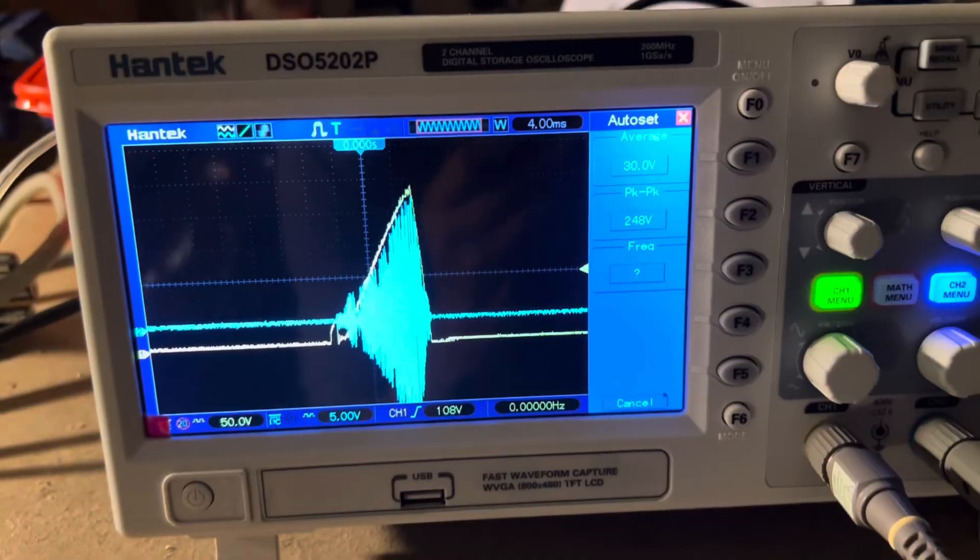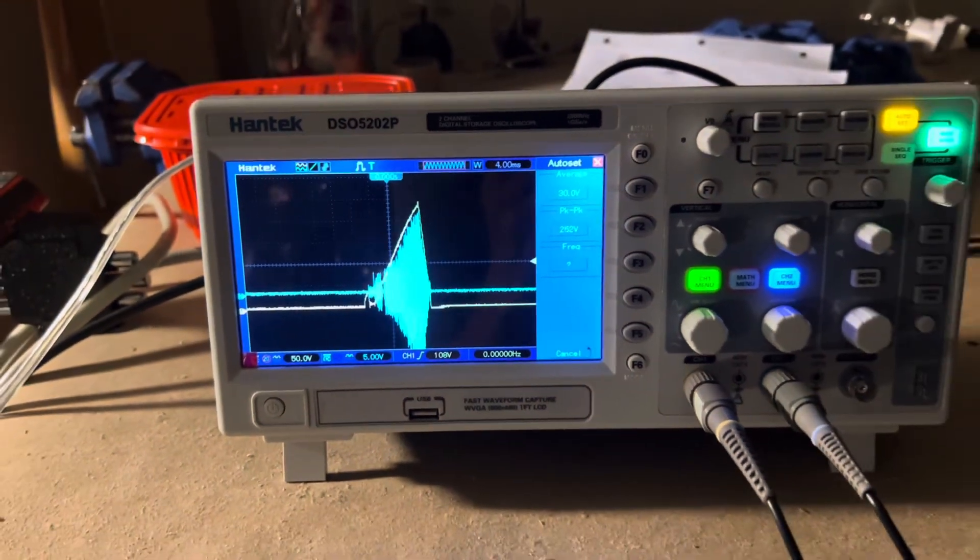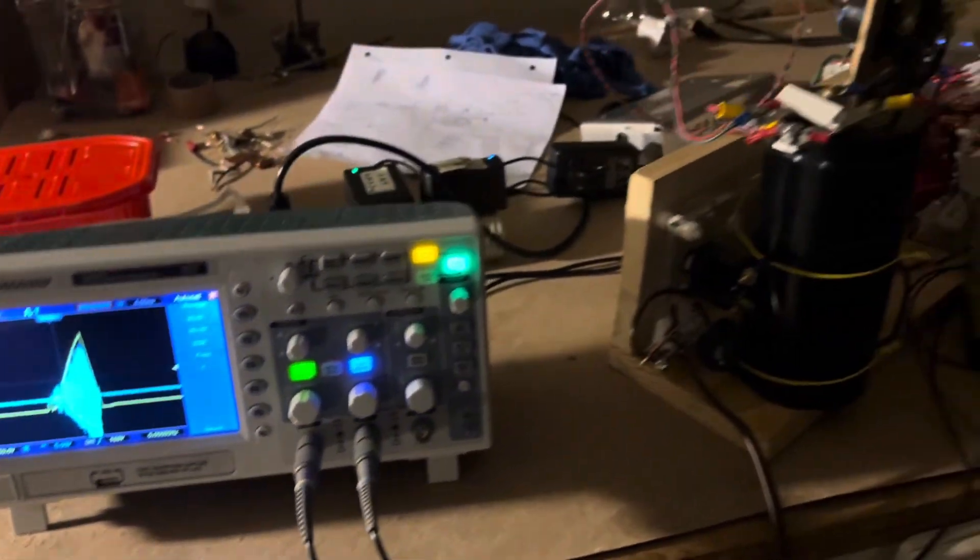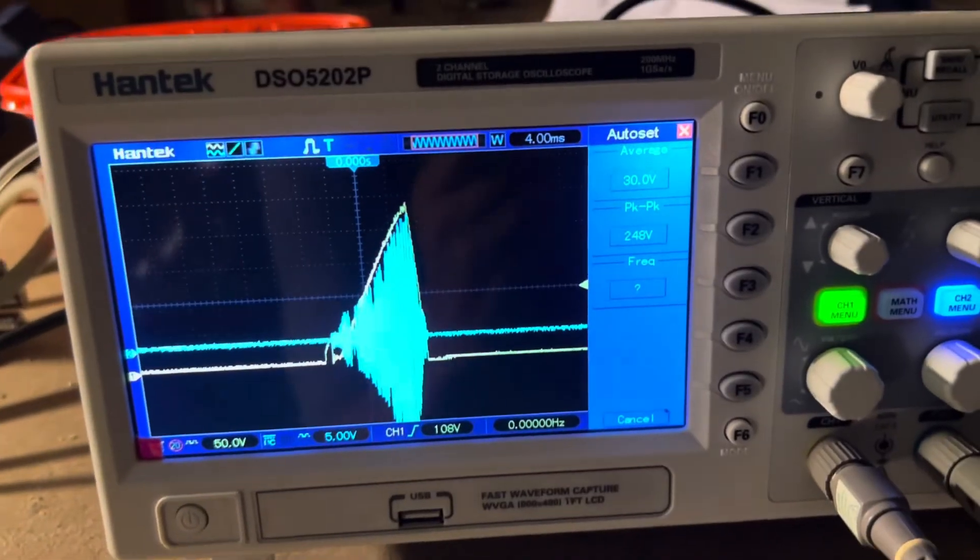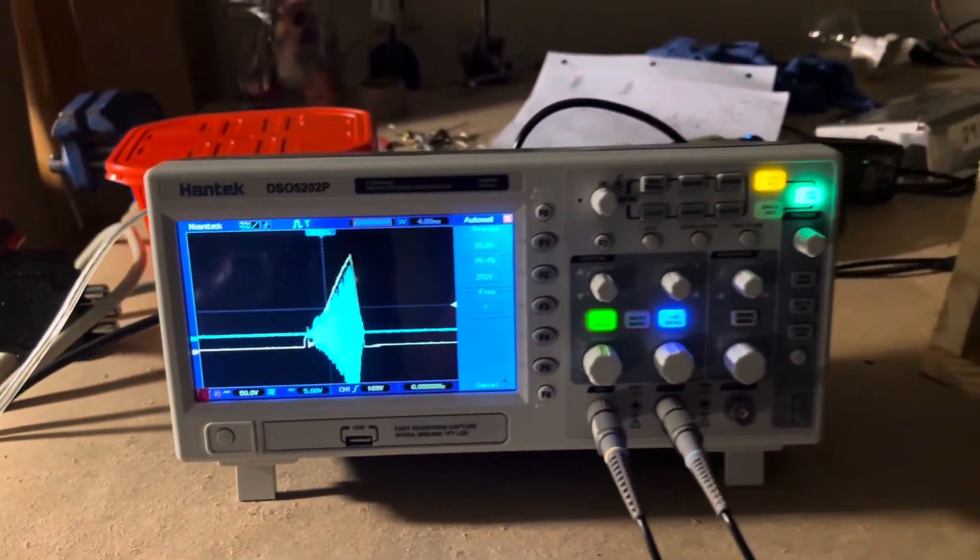So here's the yellow trace showing the ramp and the blue trace is the current in the primary circuit. Notice how clean the ramp is, very smooth straight ramp.